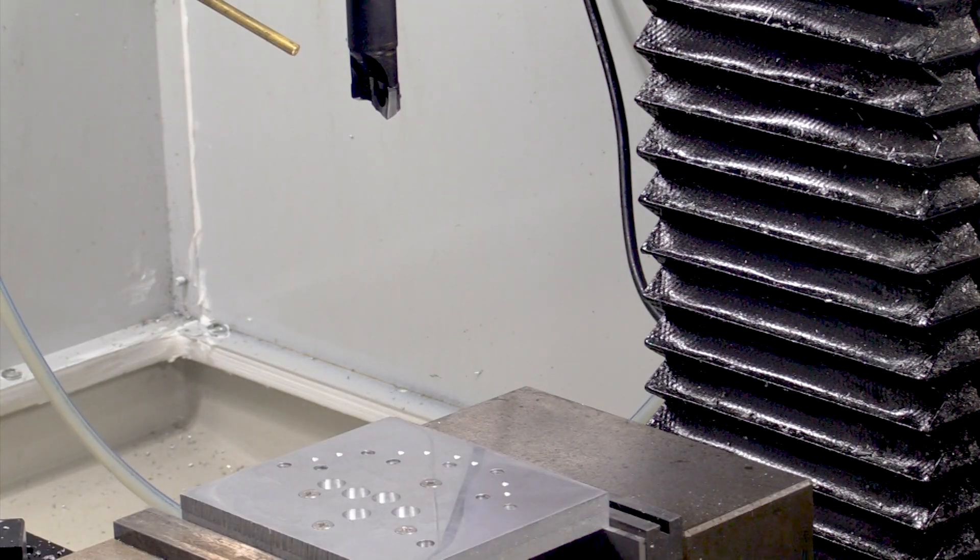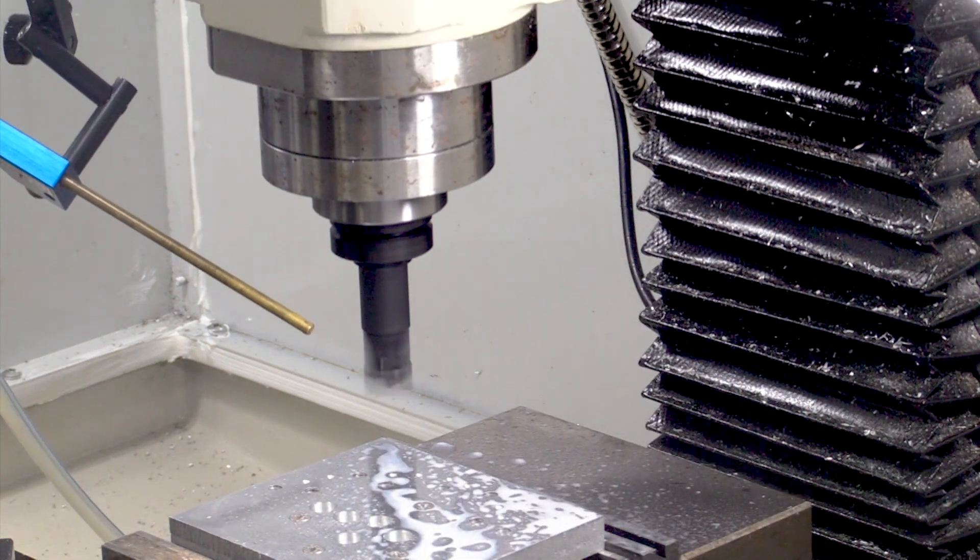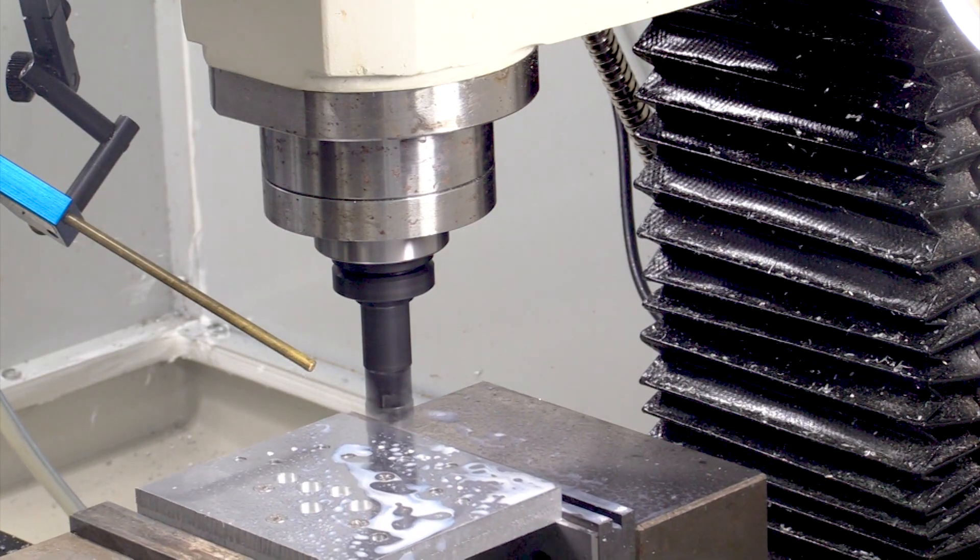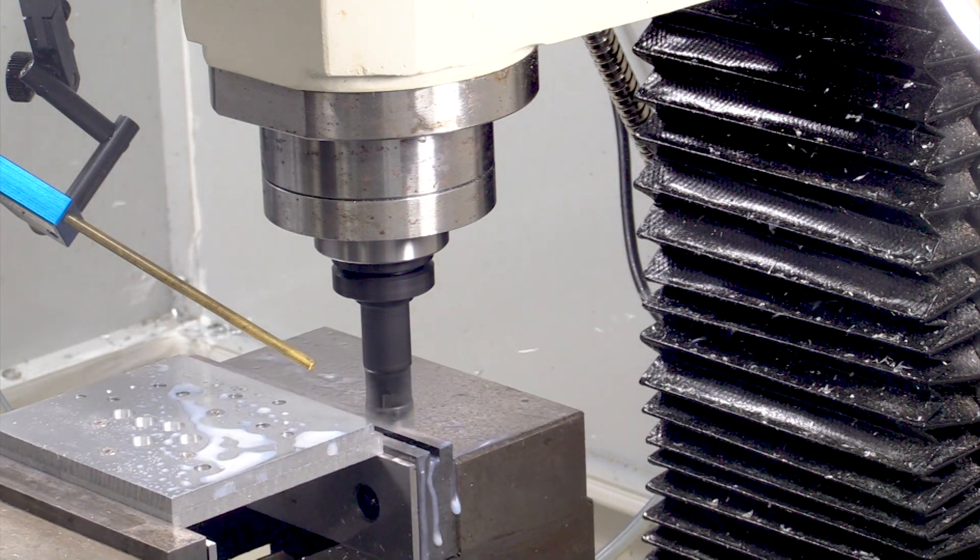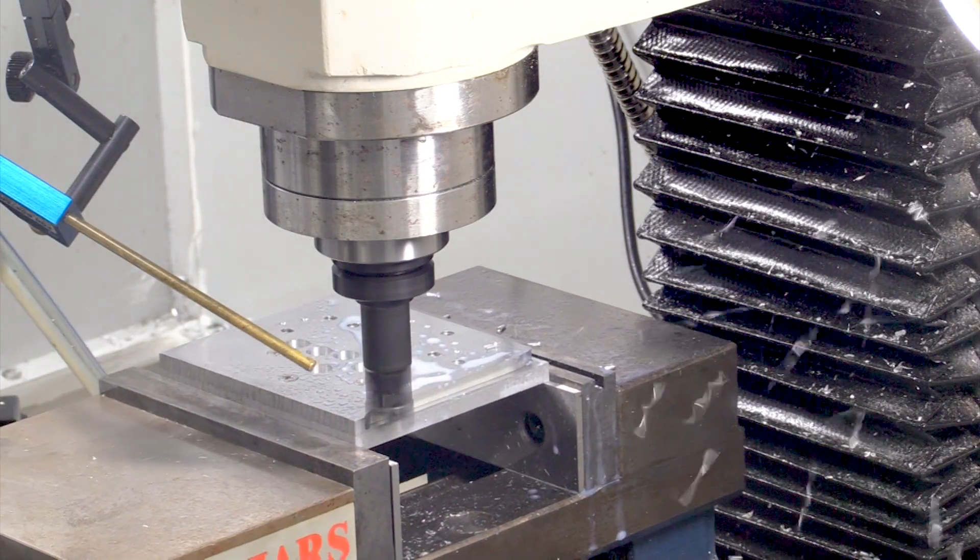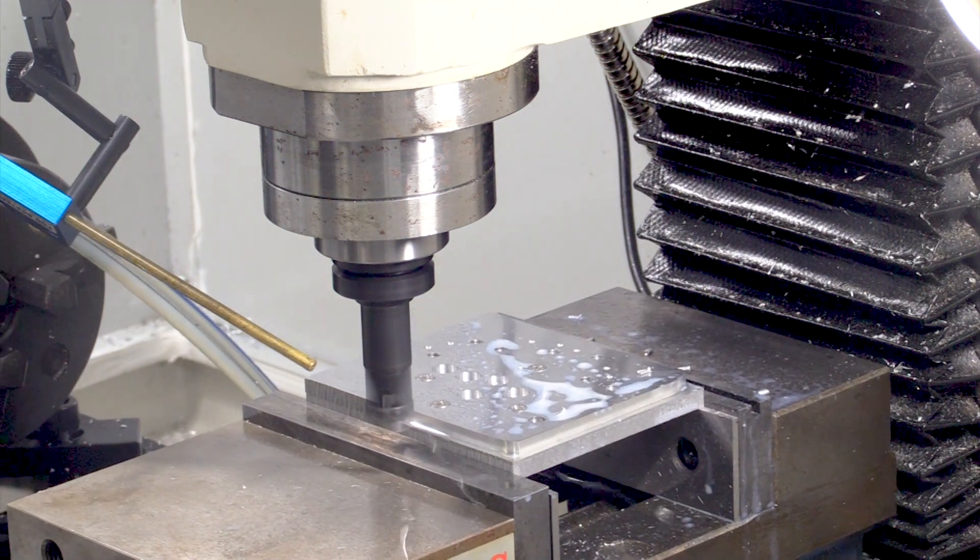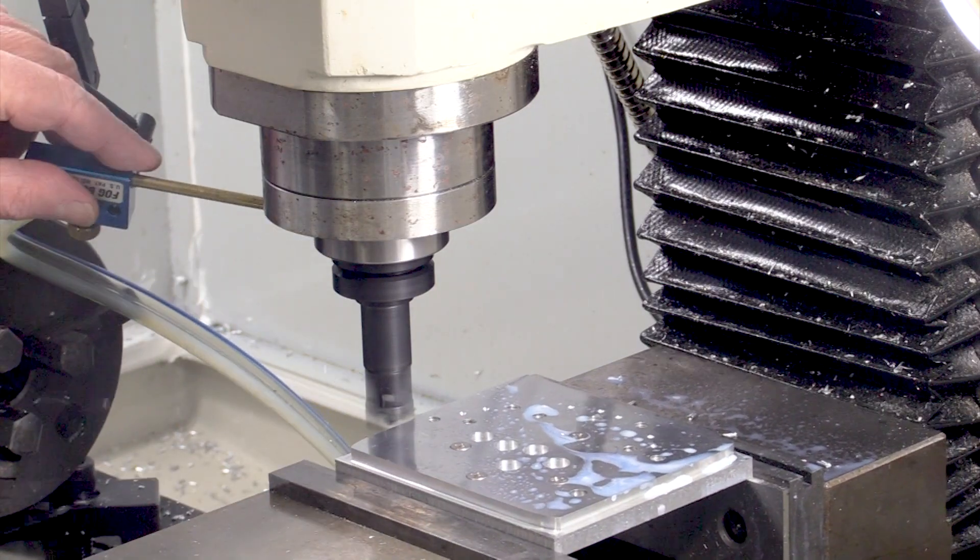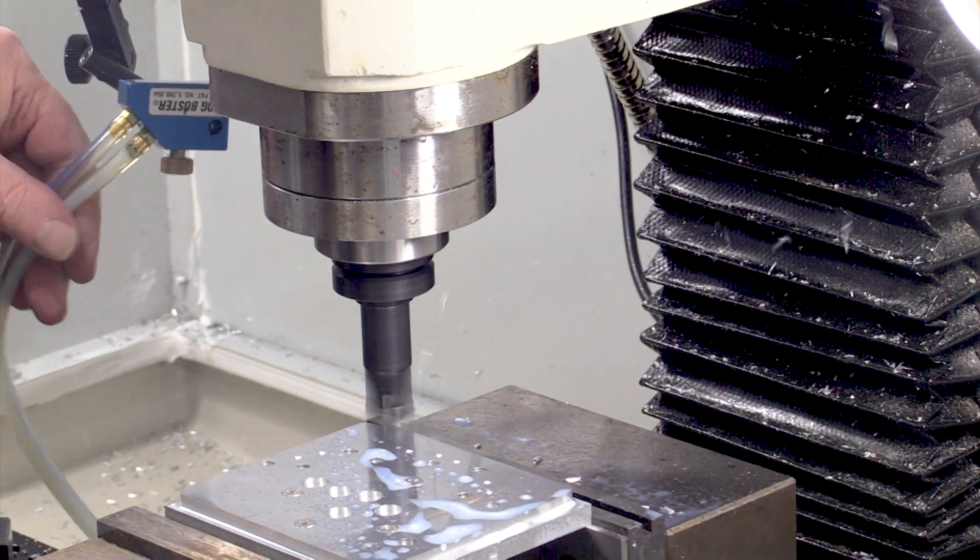The first step is to use my three-quarter inch shear hog to remove the bulk of the material. There we go.